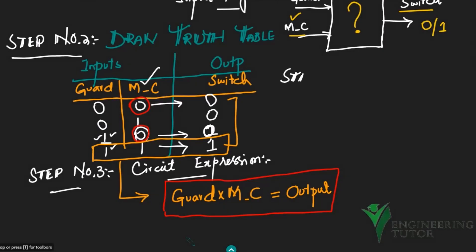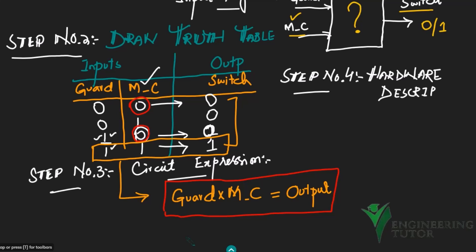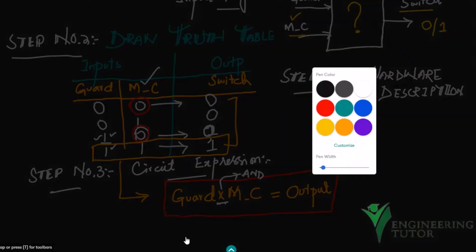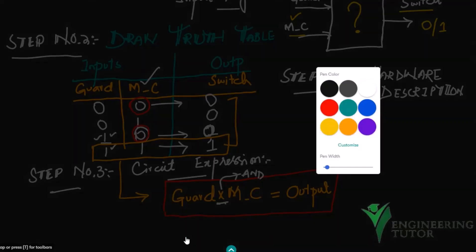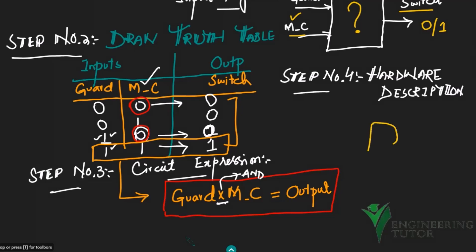Step four is the hardware description. We have just one gate, which is the AND gate. It has two inputs — guard and MC — and one output, which is the switch. When both guard is present and the motor is cool, the output will be on.